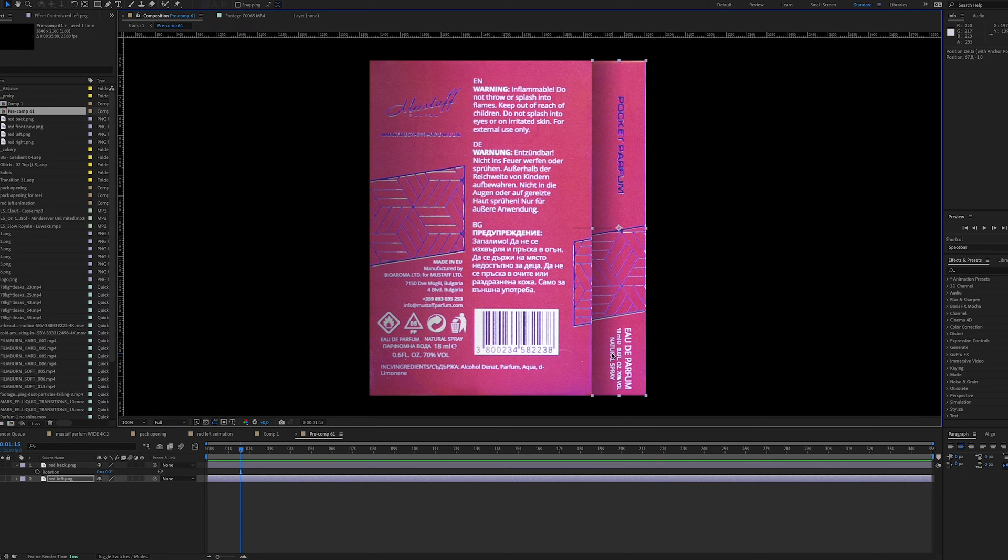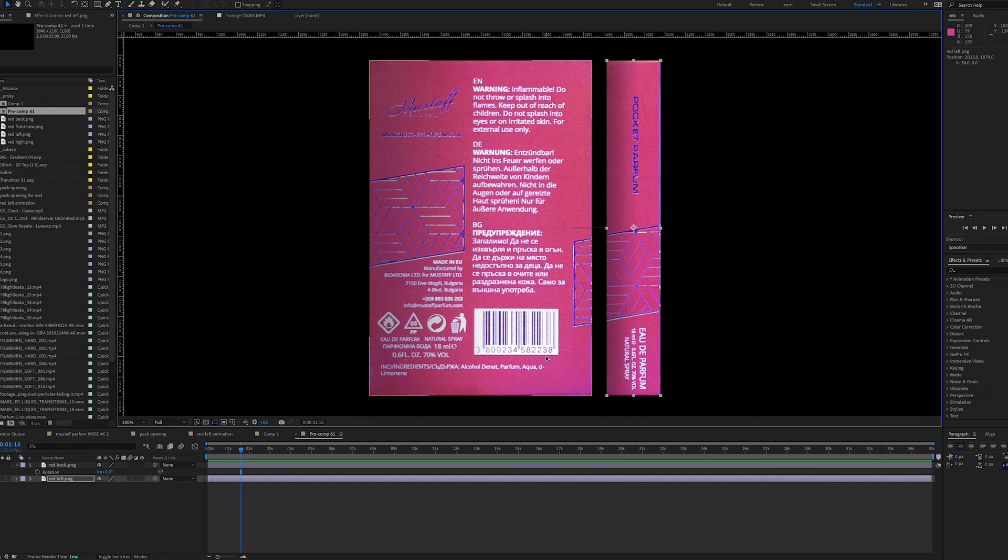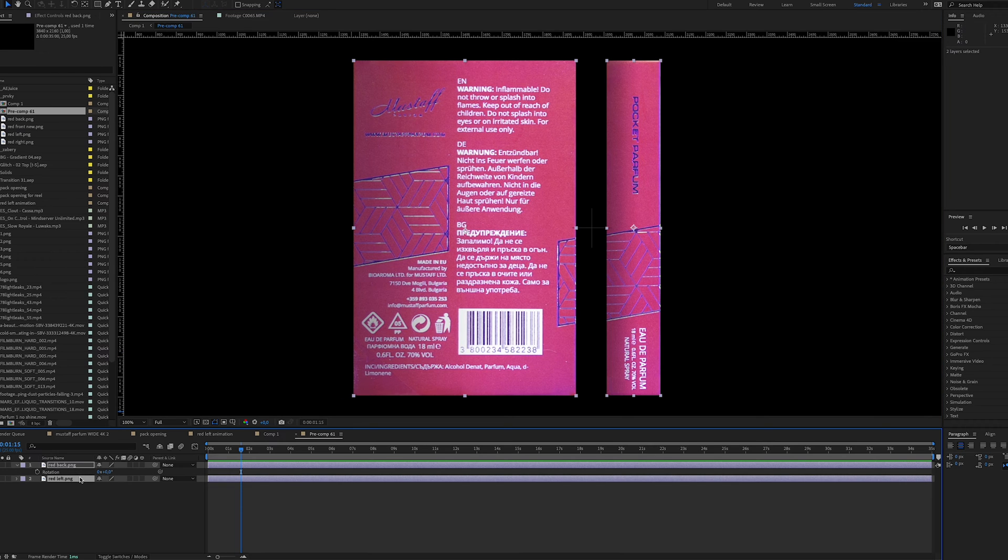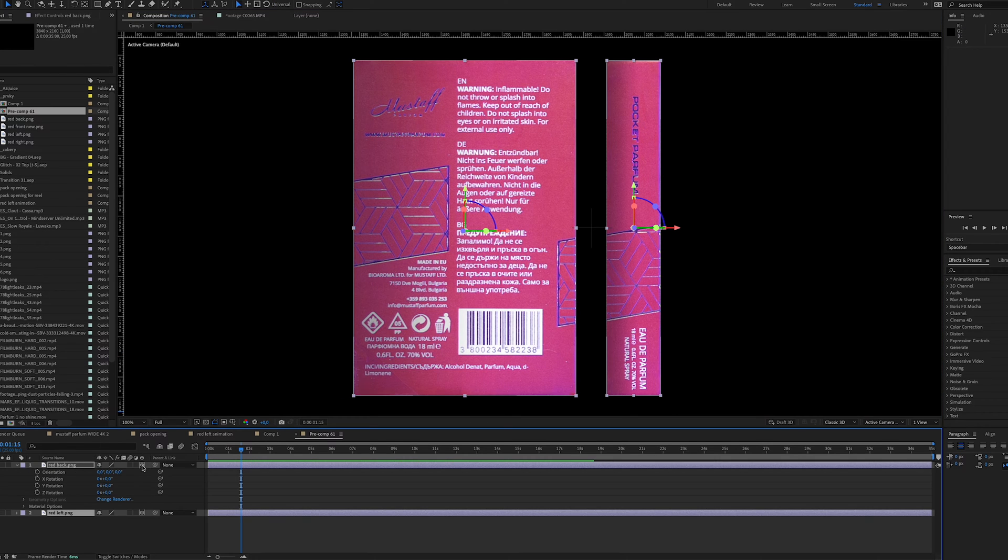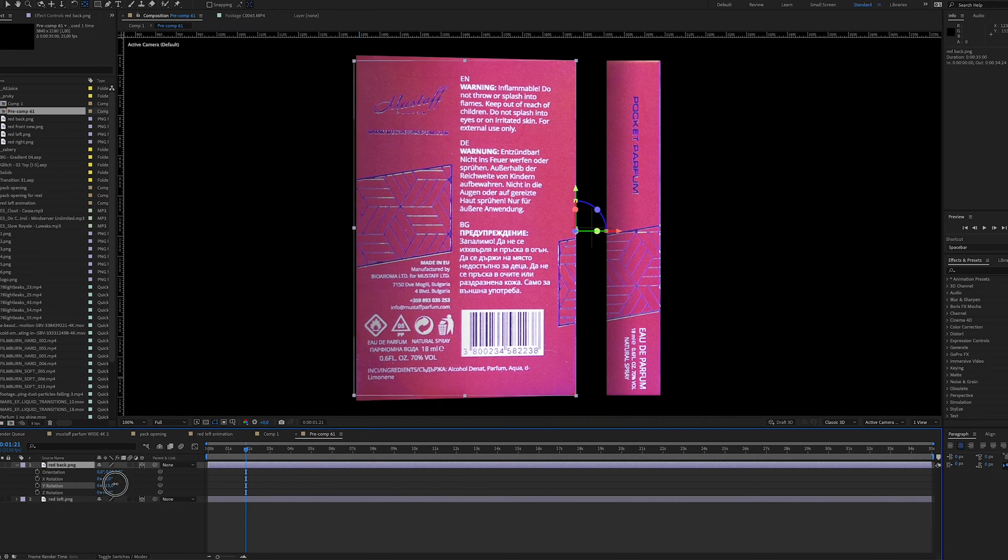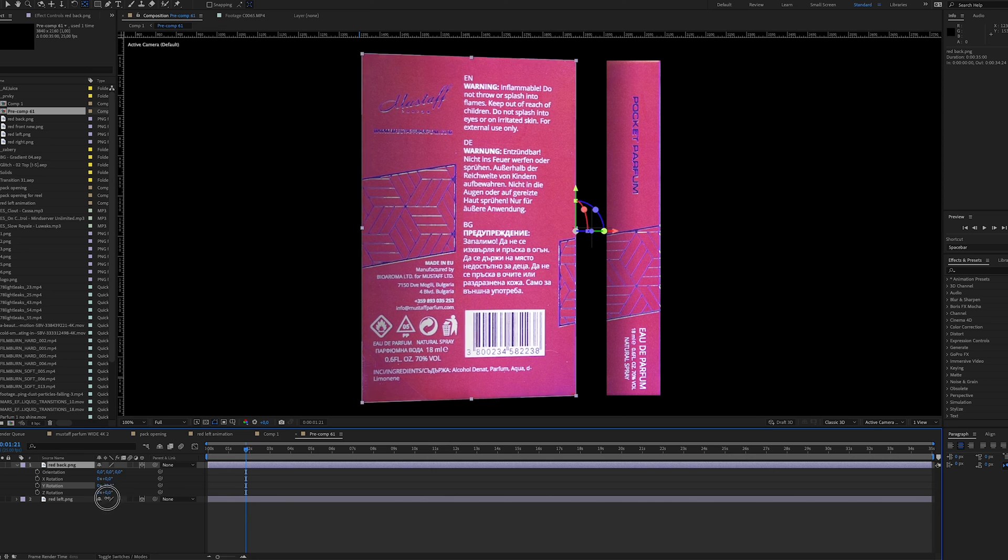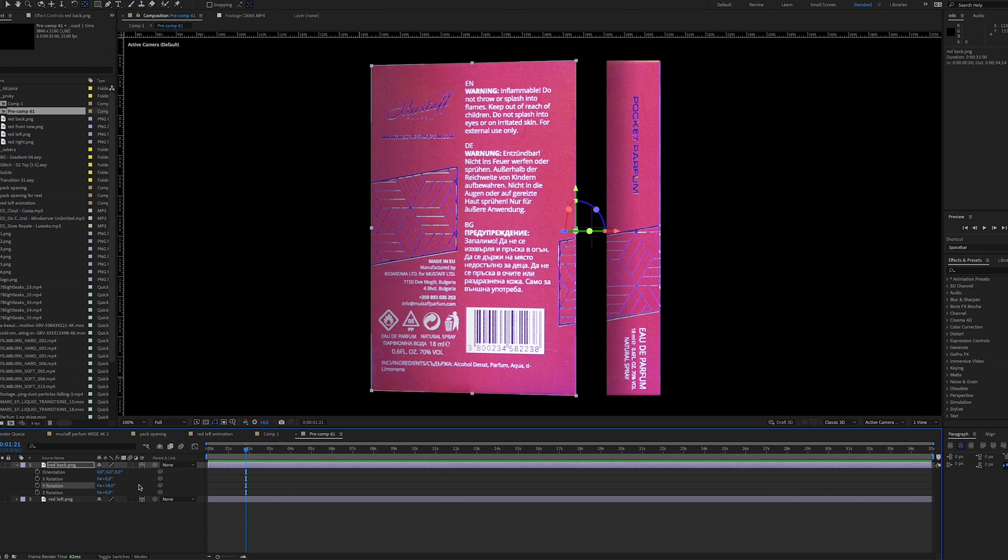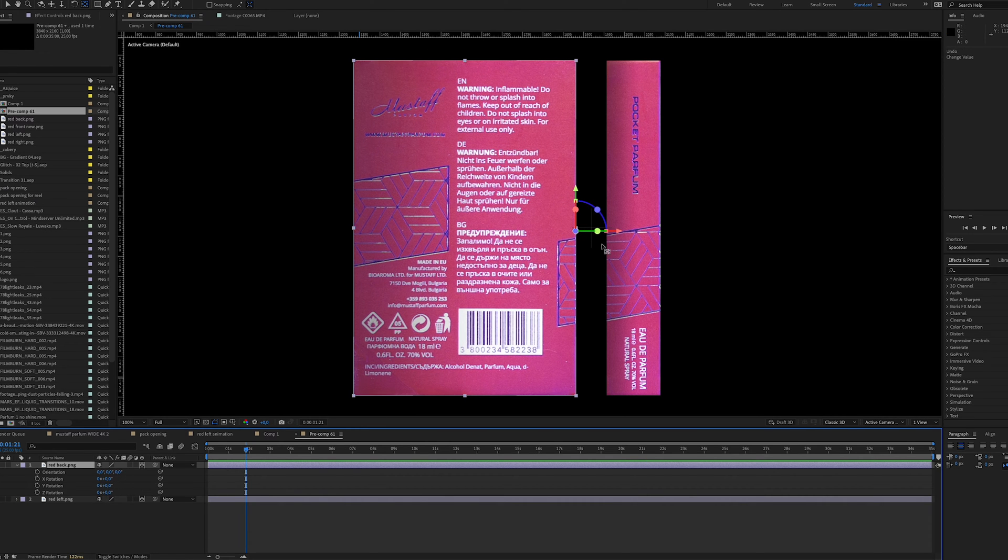So in the new composition with the left side of the label and the back side of the label I select both images and make them 3D. The next step is moving the anchor point on both images to the edge of the image. The reason why I move the anchor point to the edge of the image is because I want to rotate the image from the side not from the middle.